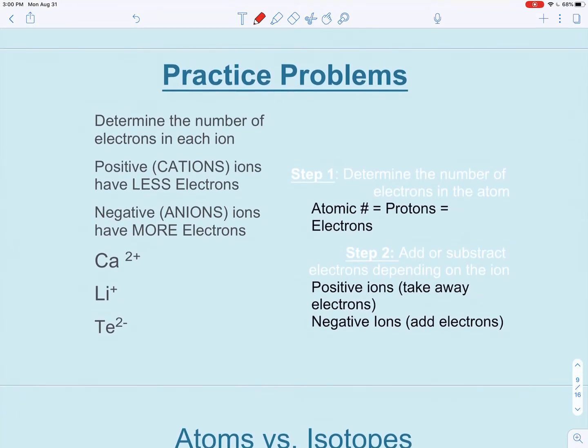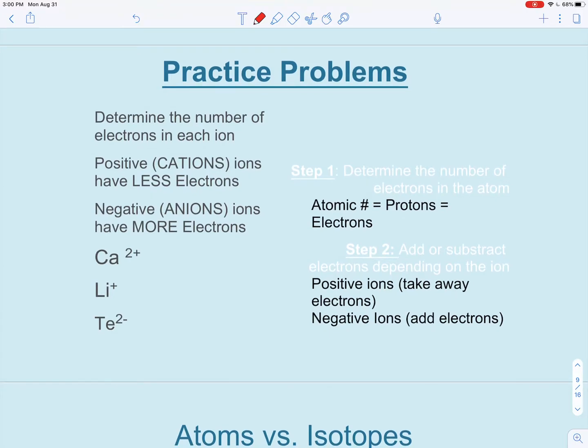We're going to do a couple practice problems together, and you can just follow along here. A couple steps: First step, determine the number of electrons in the atom. That's just in a normal atom. And then our second step, we're going to add or subtract electrons depending on the ion. Remember, ions have different number of electrons.